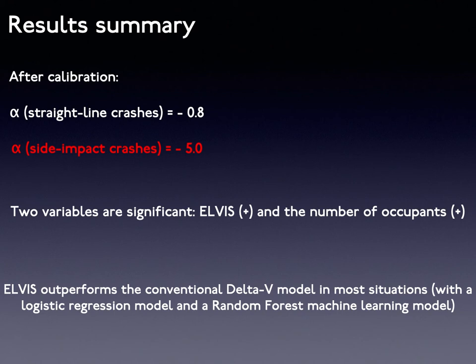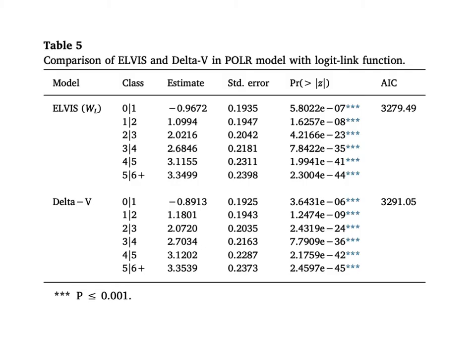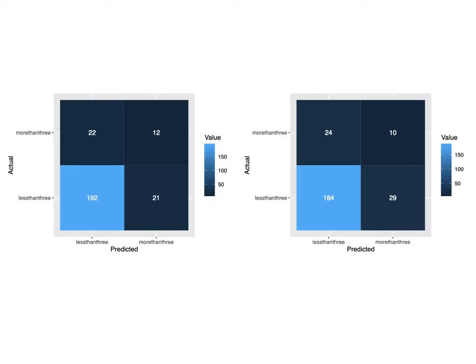We further compare the two models in both regression and machine learning algorithms. In most situations, our ELVIS model performs better than the delta-V model. In regression, the ELVIS model has a lower AIC compared to the delta-V model. In machine learning models, the ELVIS model achieves higher prediction accuracy using the random forest algorithm.